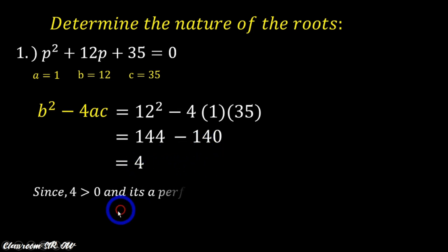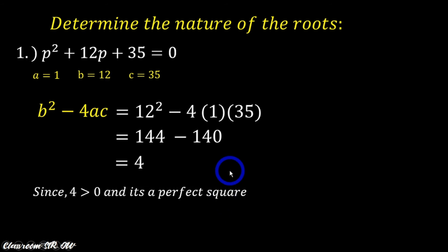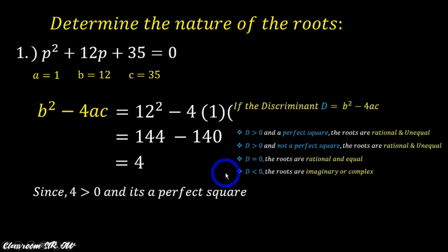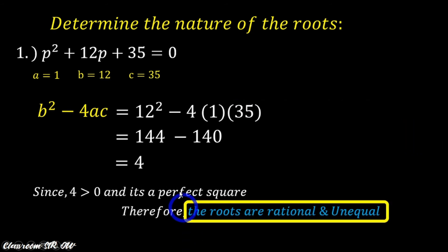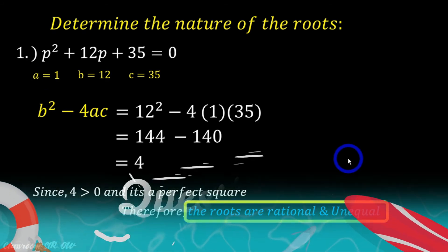Since 4 is greater than 0 and it is a perfect square, recalling our summary, it states that if d is greater than 0 and a perfect square, then the roots are rational and unequal. Therefore, the roots of this quadratic equation are rational and unequal. If you have some questions, you can always write them in the comments section.